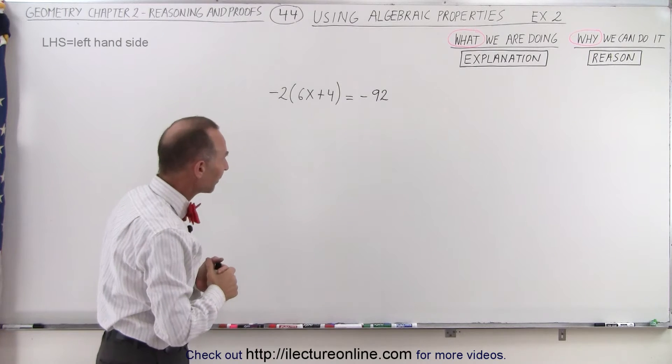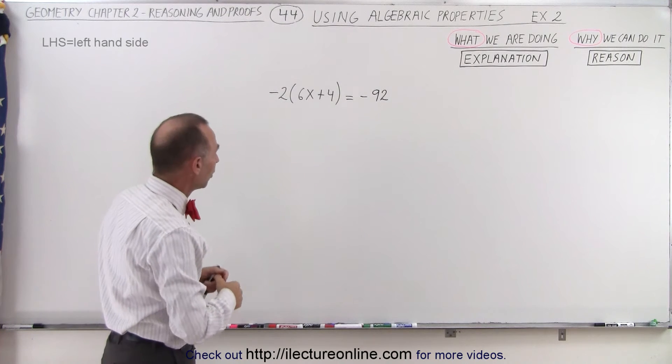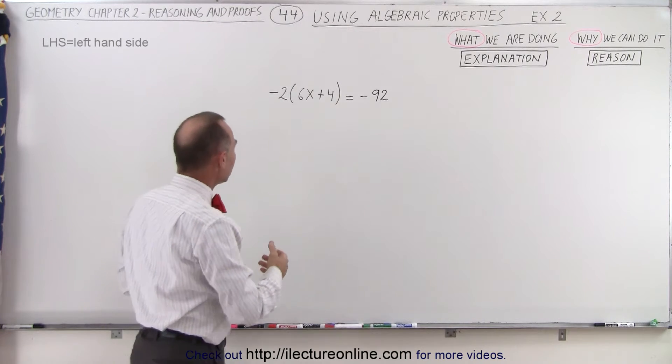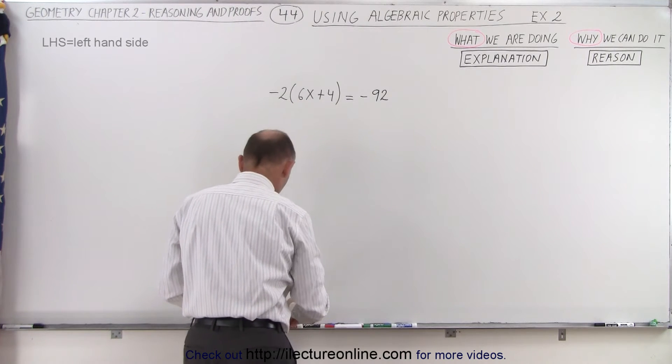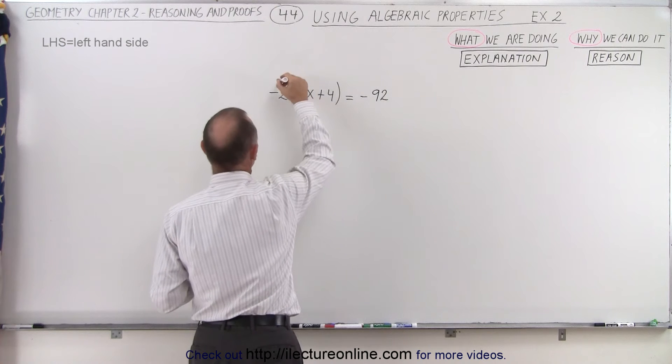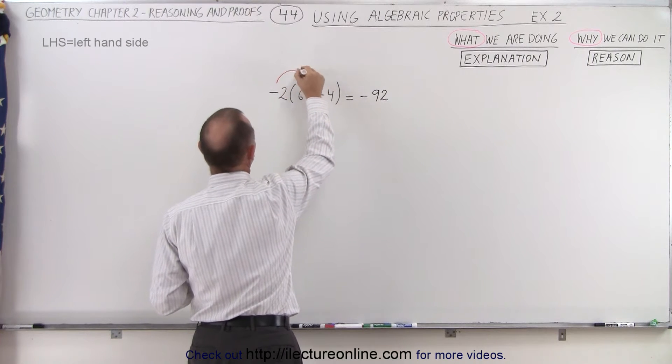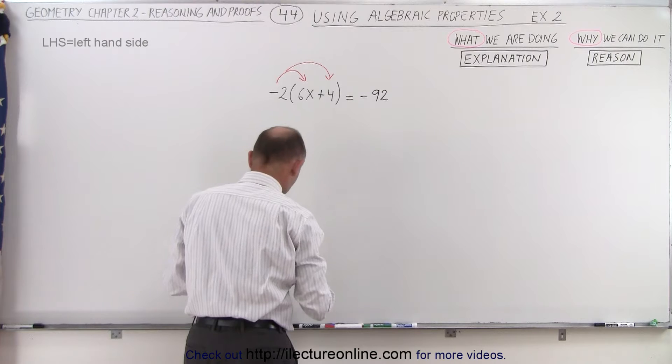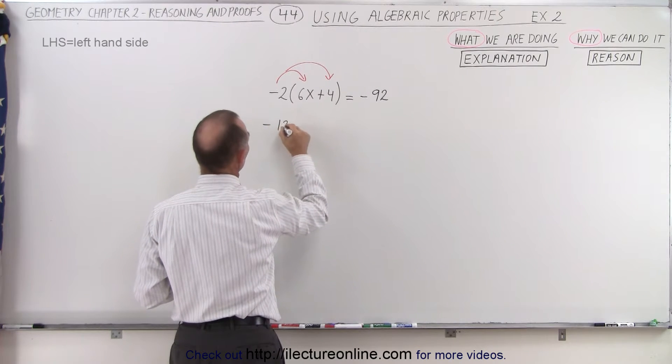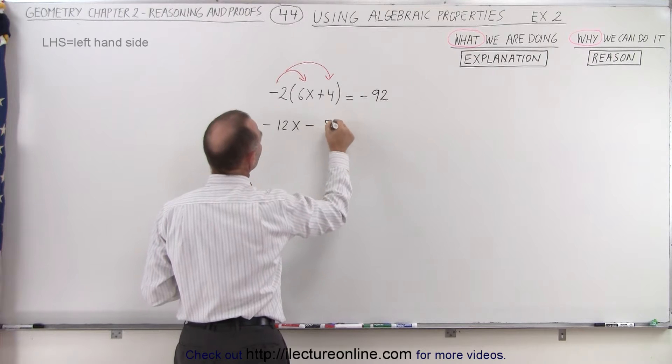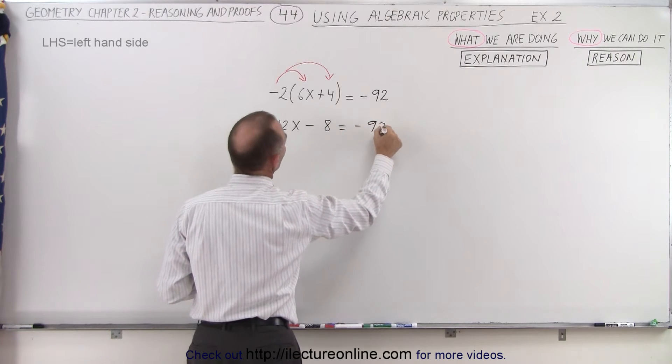Here we have a linear equation. The first thing I want to do is distribute the minus 2 over the 6x and the plus 4. So I'm going to multiply the negative 2 times the 6x and the negative 2 times the 4. When I do that, this becomes minus 12x minus 8 is equal to minus 92.